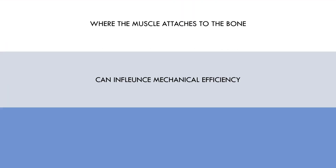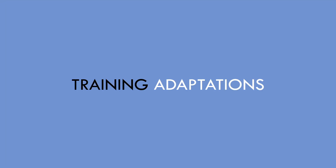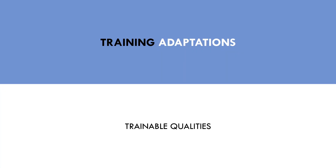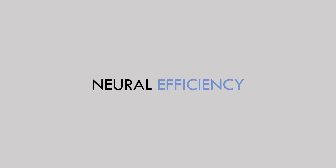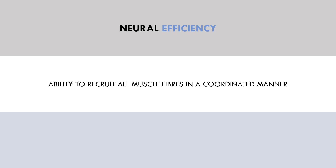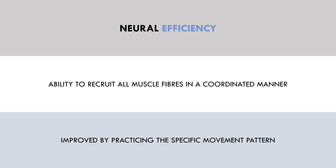The second category of factors that influence strength are training adaptations — these are trainable qualities, meaning that we can improve them to increase our strength. The first is neural efficiency. This refers to how well the nervous system can recruit the muscle fibers in a coordinated manner, and can be improved by practicing the specific movement pattern you're trying to get stronger at. Neural efficiency is acquired fairly quickly, and a trainee can only become so efficient at a lift before they maximize this adaptation.